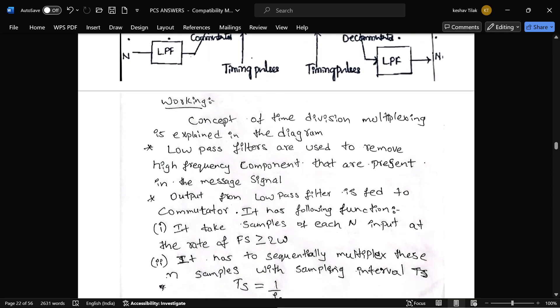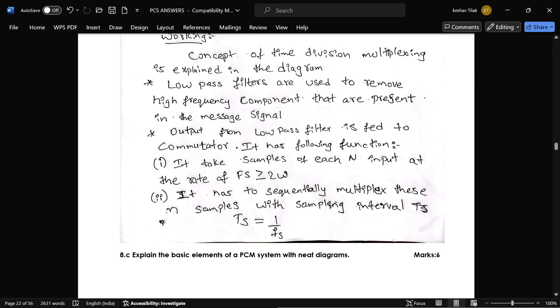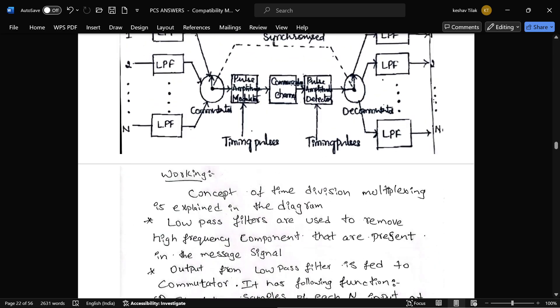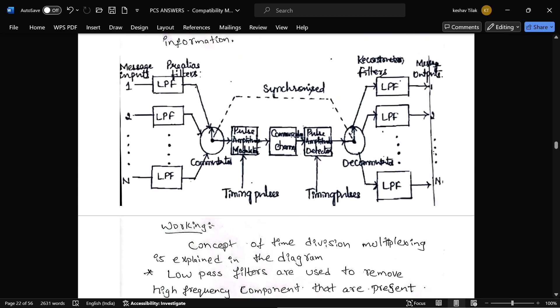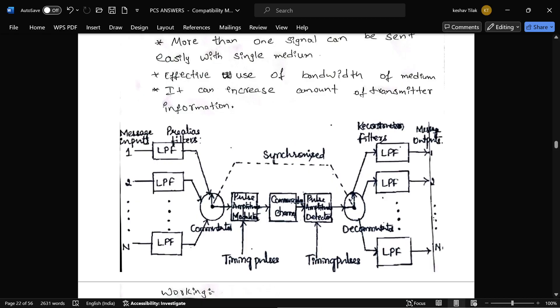And from that we will get the message signal. And this is the explanation for that. This much is not enough. This much is till here. And after that it will give to low pass filter. And from that we will get the message signal. If you write this much, it is enough.